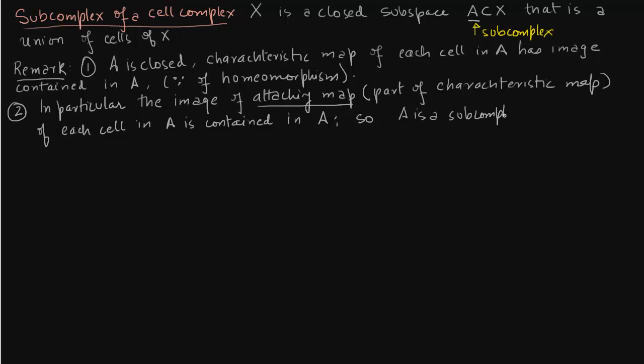So let us just mark this in blue. What we get is (X,A). Now this is a pair, a CW pair.